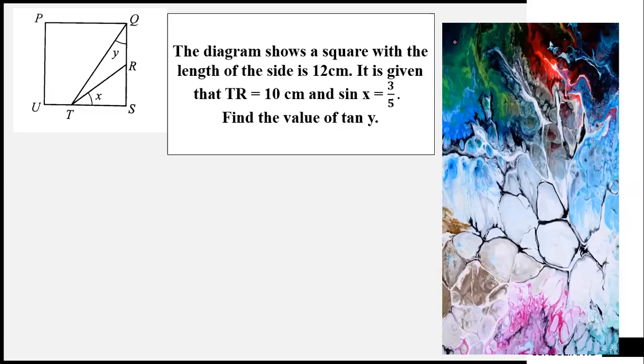The diagram shows a square with the length of the side is 12 cm. It is given that line TR is equal to 10 cm and sin x is equal to 3/5.